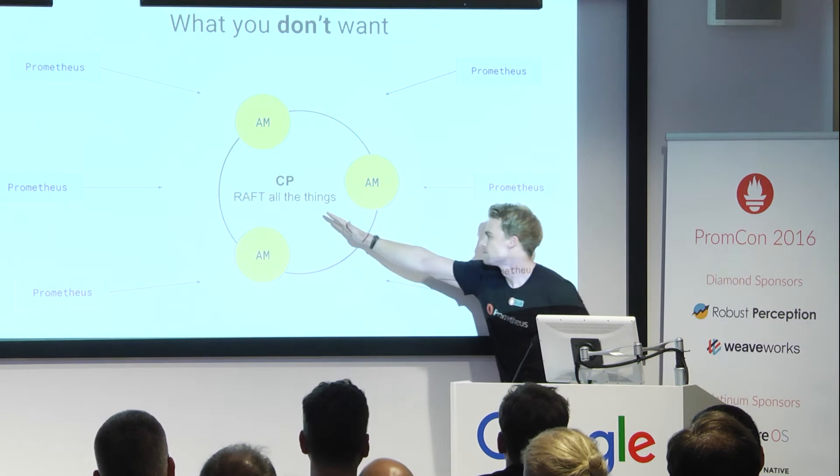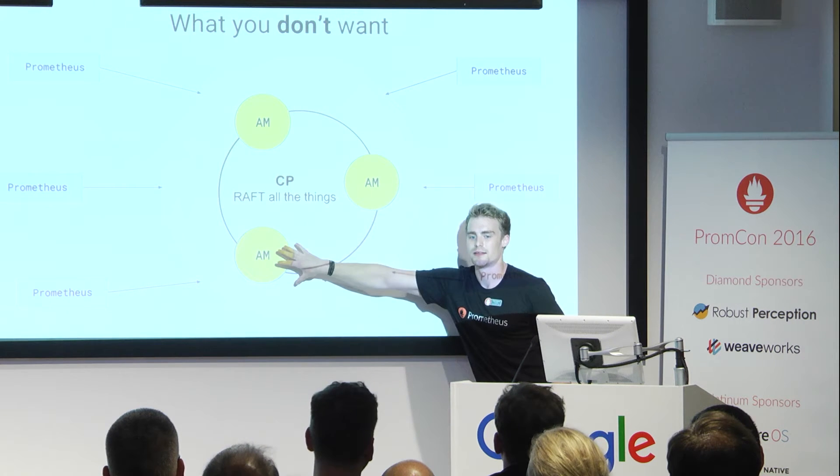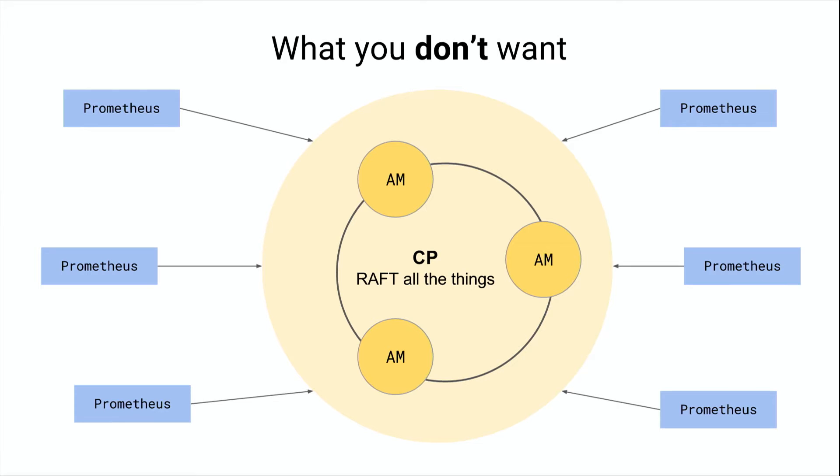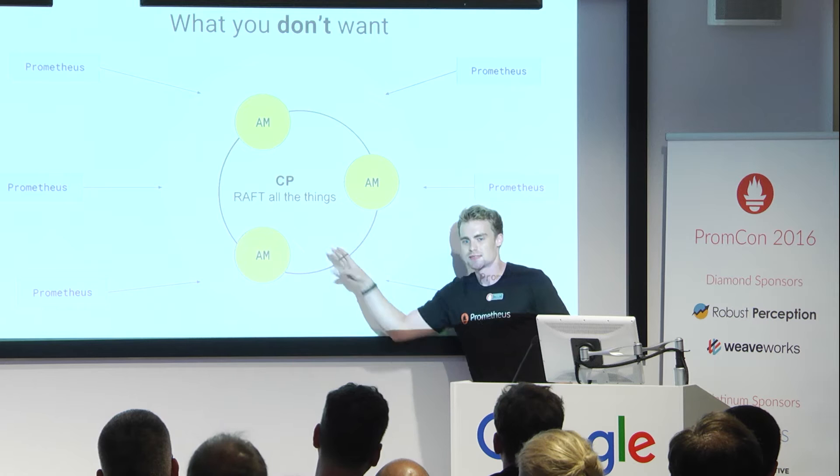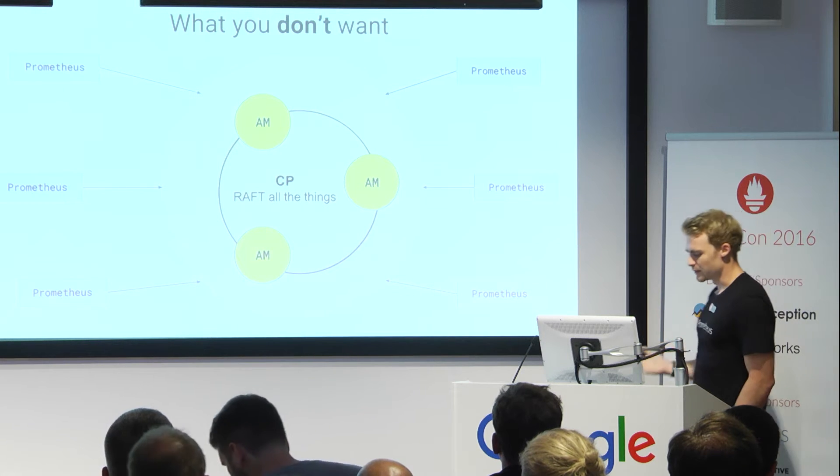So if you have a partition here you can do all things you want here but here you can't basically do anything. And then you start coming up with, okay, maybe if we don't have consensus here we just like alone we can work around this in some way. But then you're talking about AP actually. You don't want CP in this case.